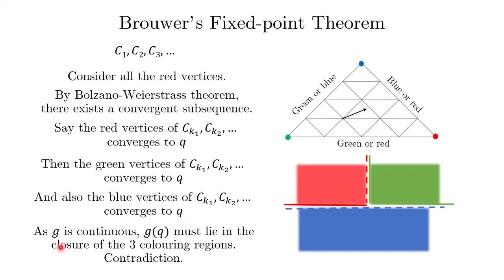Because g is a continuous function, g(Q), when applied to all the red vertices, eventually when we take the limit, we conclude that g(Q) must lie in the closure of the red region. When we apply g to all the blue vertices and take the limit, g must lie in the closure of the blue region.